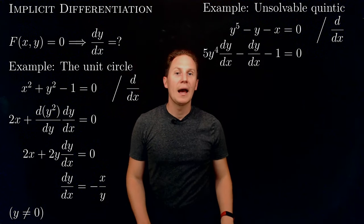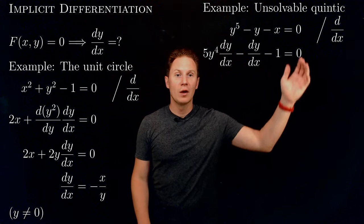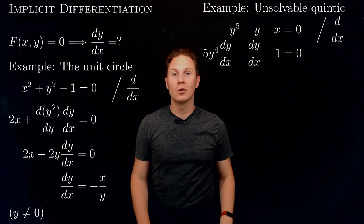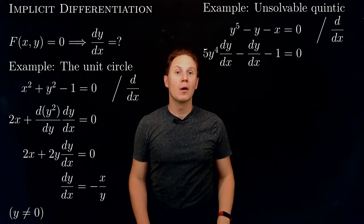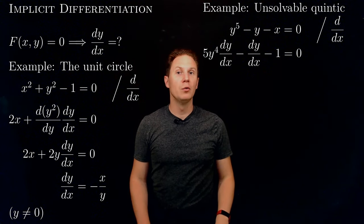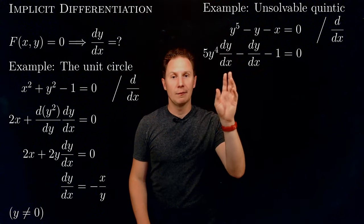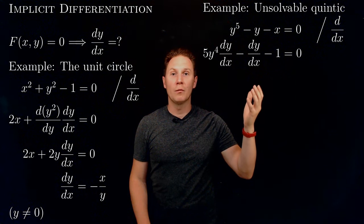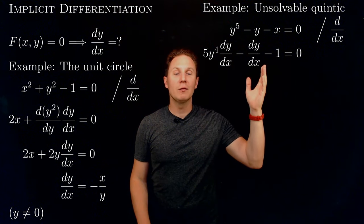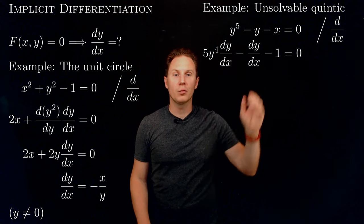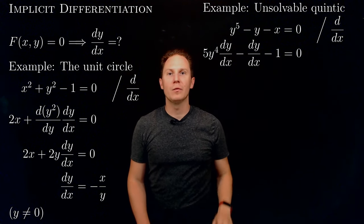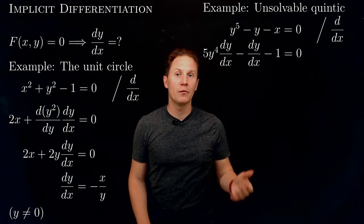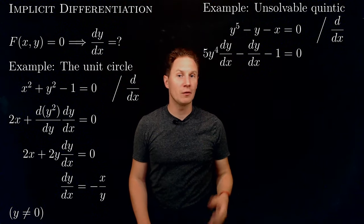Differentiating both sides with respect to x: on the right hand side the derivative of 0 gives 0. On the left hand side, the derivative of y to the 5, by the chain rule, gives 5 times y to the 4 (by the power rule) multiplied by dy/dx. From this we subtract the derivative of y with respect to x, and subtract the derivative of x with respect to x, which is 1. We can solve for dy/dx by collecting the common factor of dy/dx and rearranging.